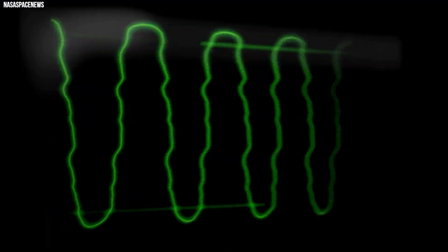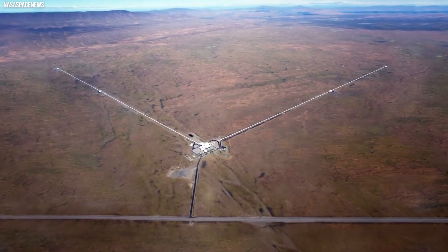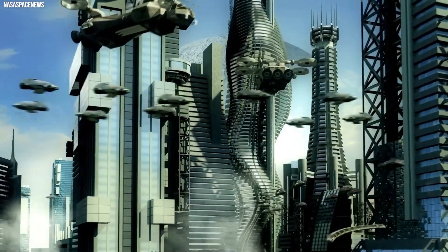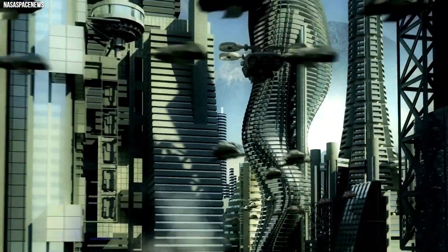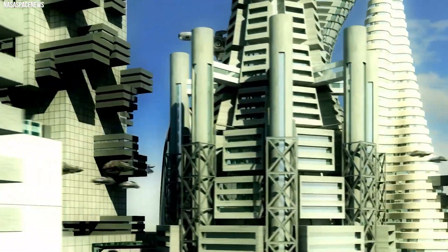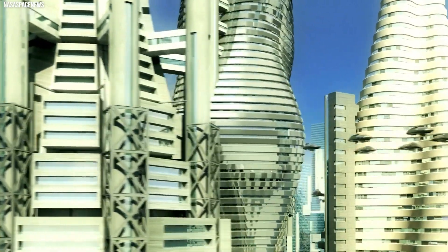The process of encoding information in gravitational waves would likely involve sophisticated technology and a deep understanding of gravitational physics. The alien civilization would need to master the manipulation of massive objects with precision, ensuring that the encoded messages are clear and decipherable at the receiving end.